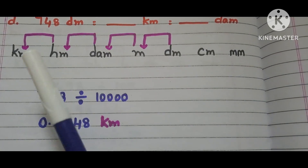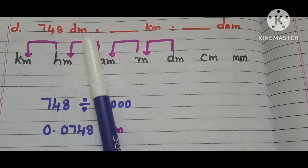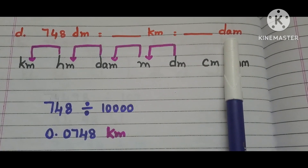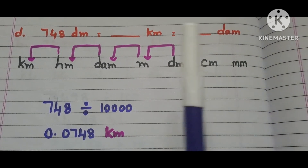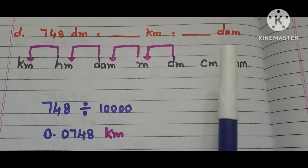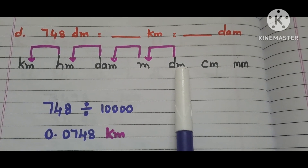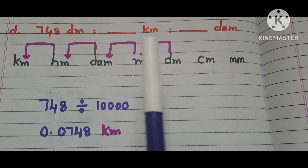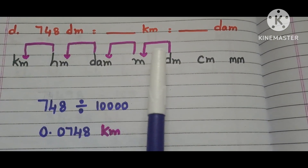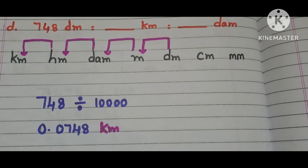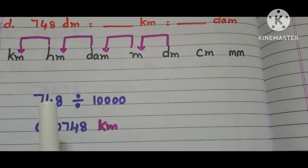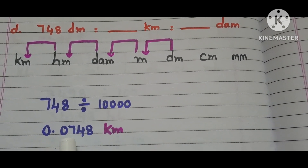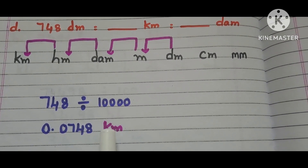Now, let us go to Part D. 748 decimeters is equals to how many kilometers? And that is equals to how many decameters? Here we have the table. Where are decimeters in the table? Here it is. Where are kilometers? Here it is. So, we have to move from right side to left side 4 steps in the table. So, we have to divide 748 with 10,000. Then it becomes 0.0748 kilometers.